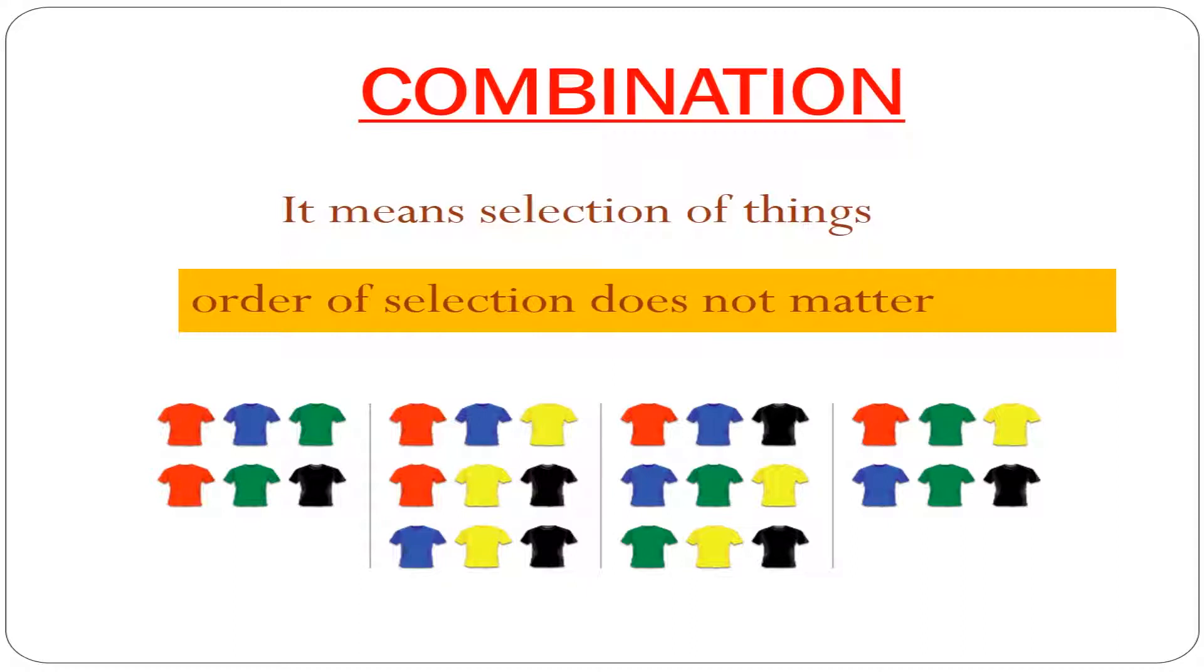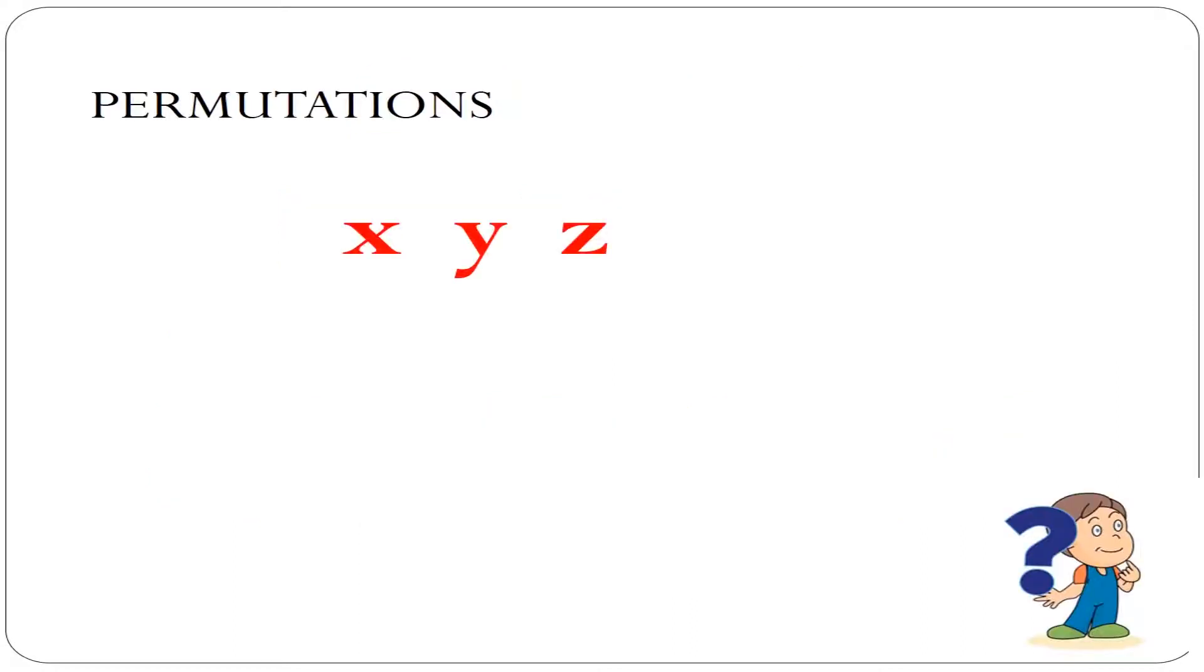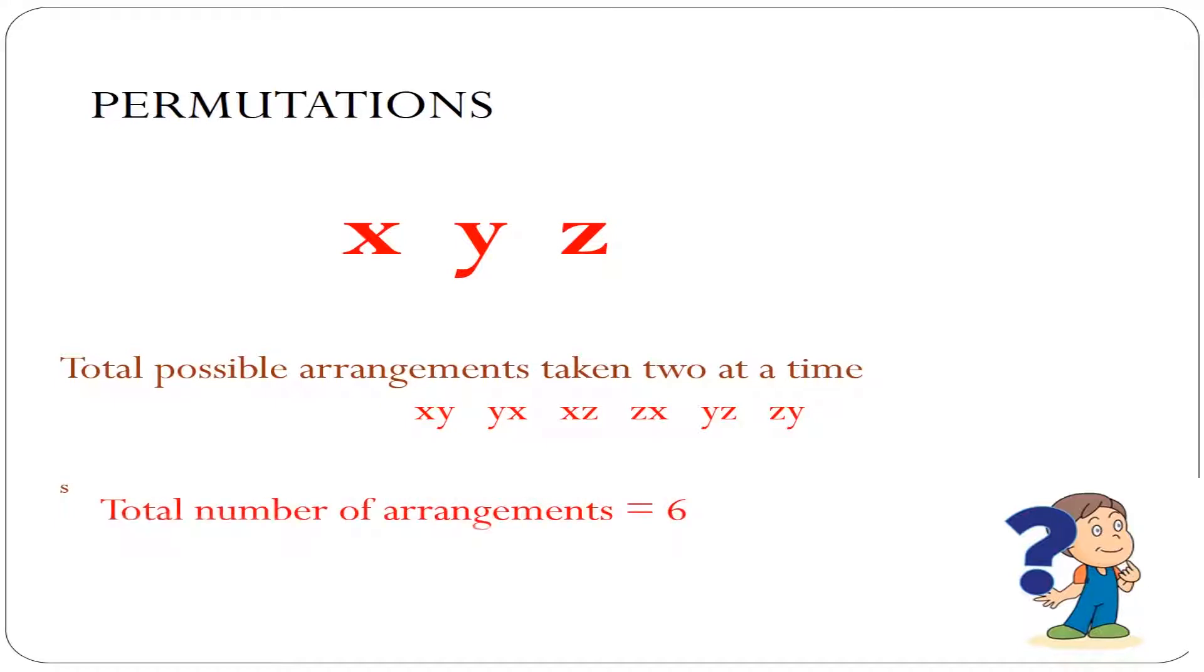As we discussed in permutation, consider three letters x, y and z. Total possible arrangements taken two at a time are xy, yx, xz, zx, yz and zy. So here total number of arrangements are six and these are permutations.